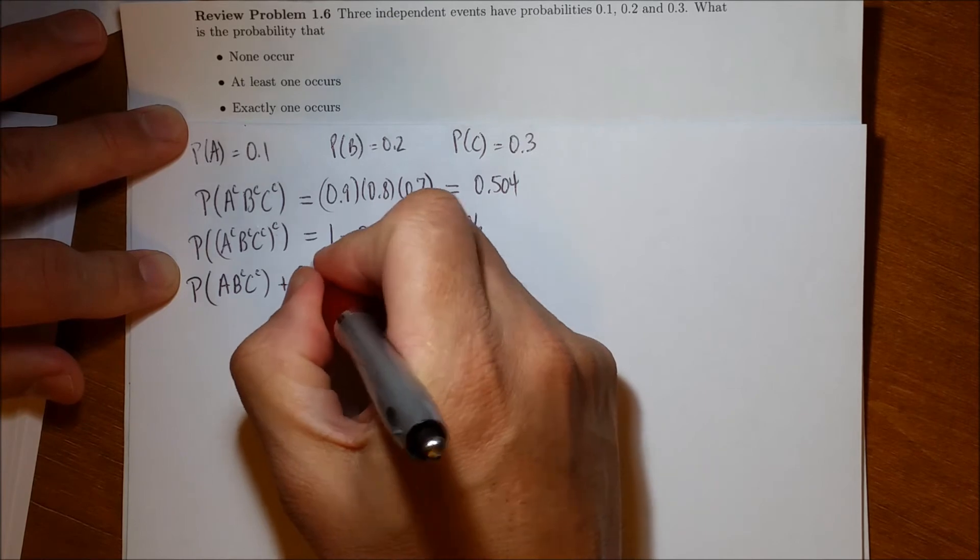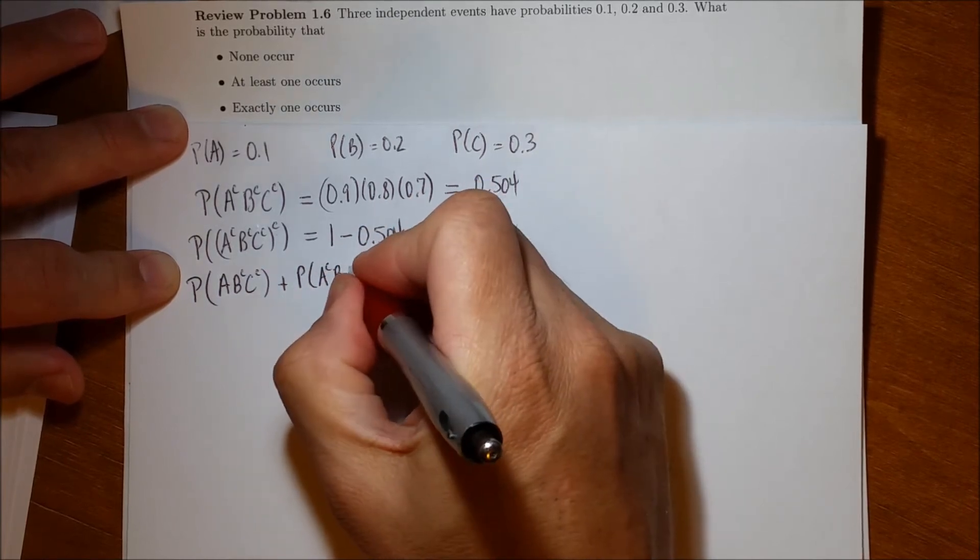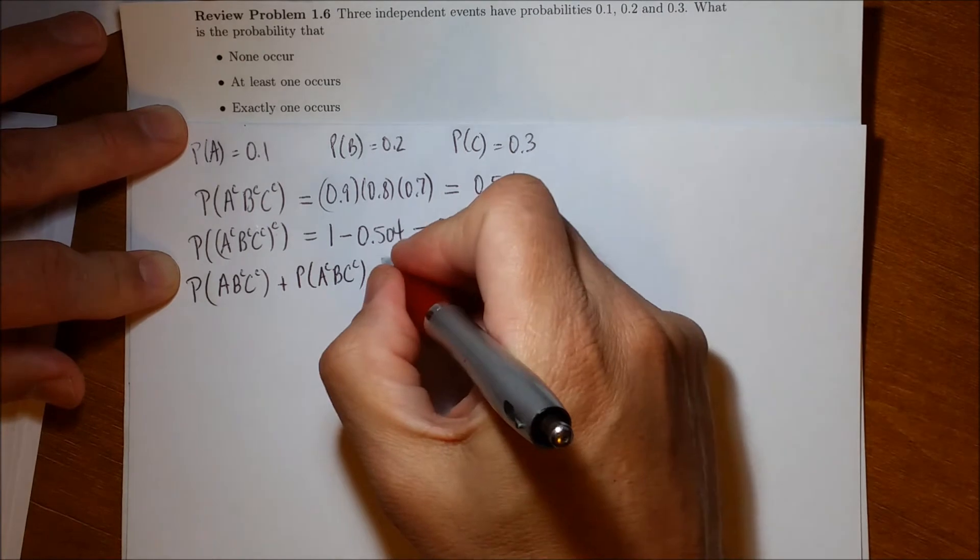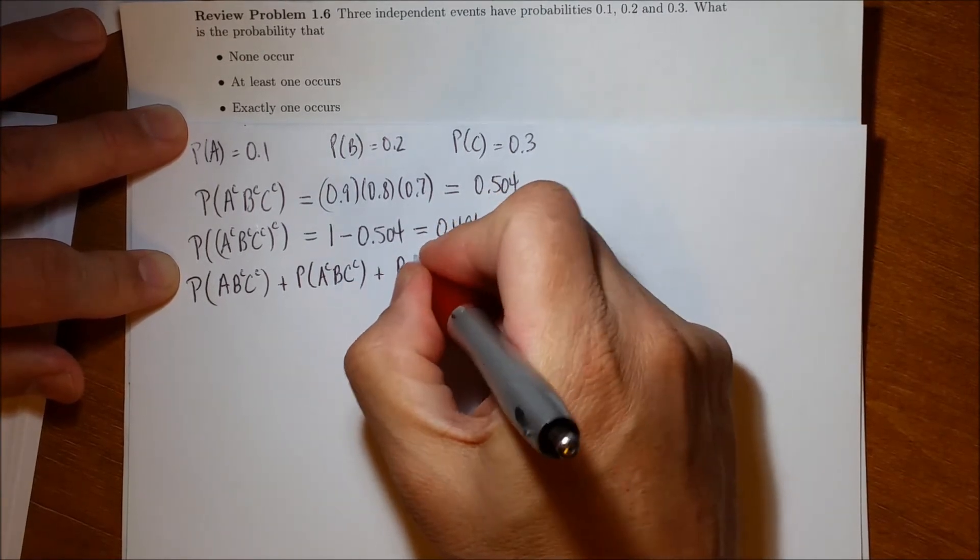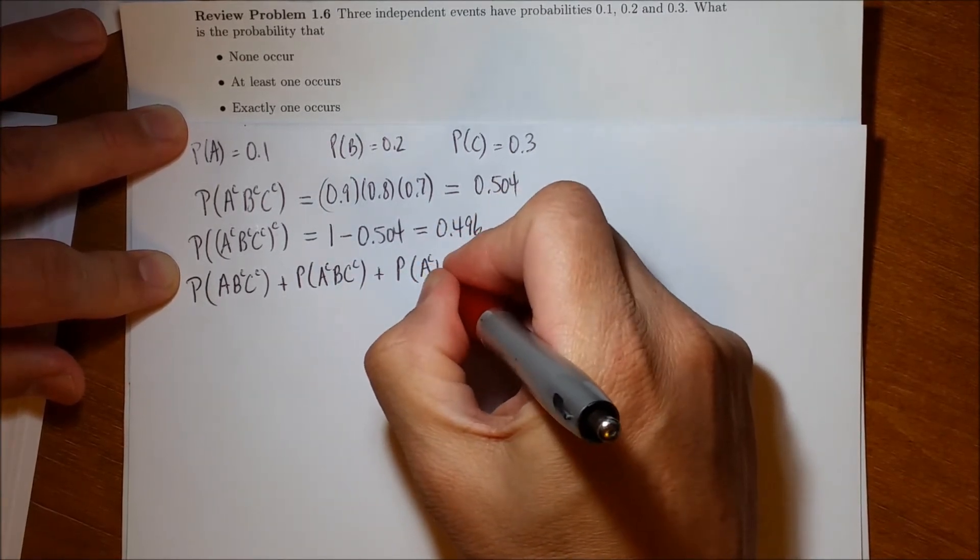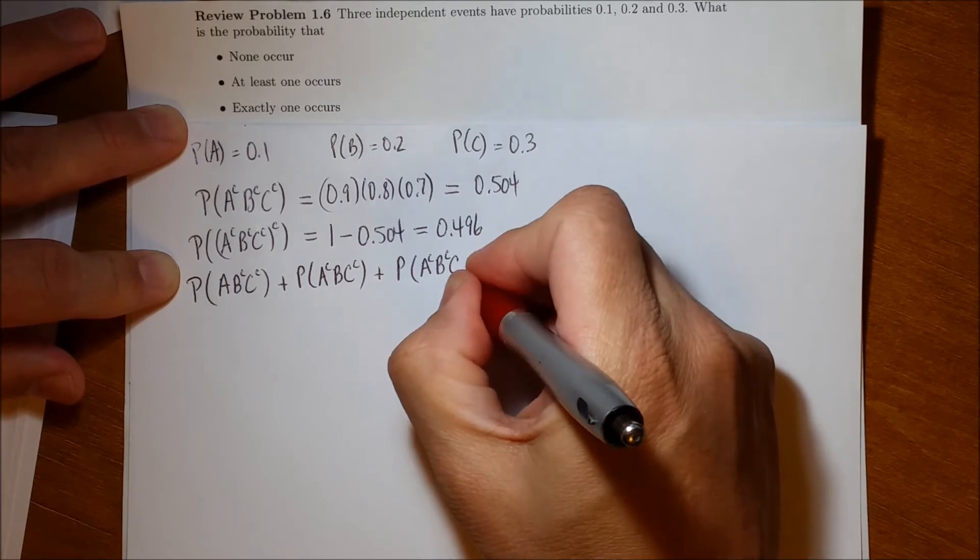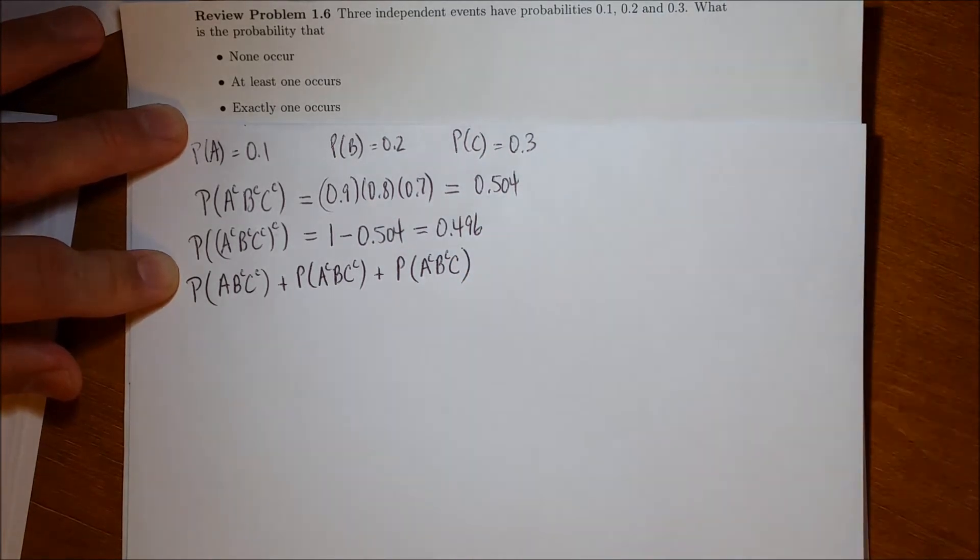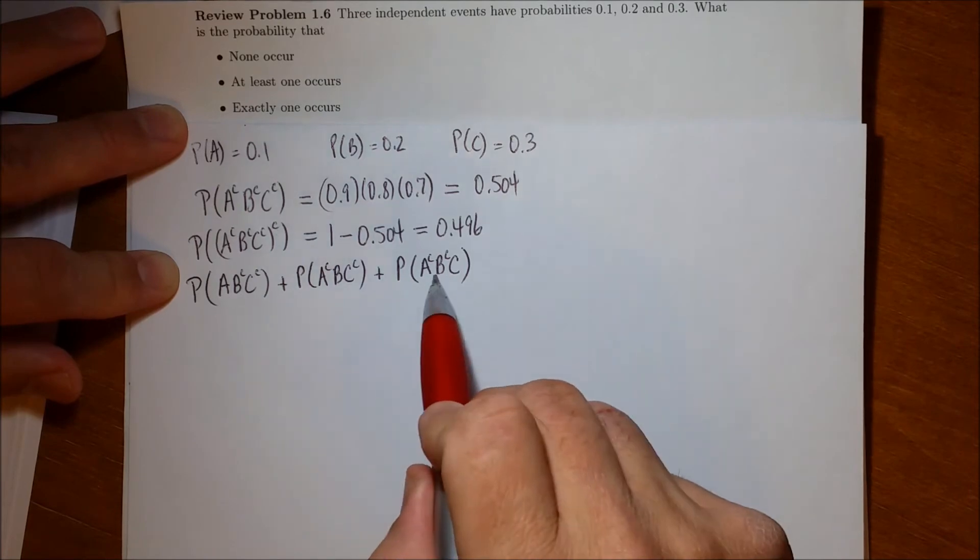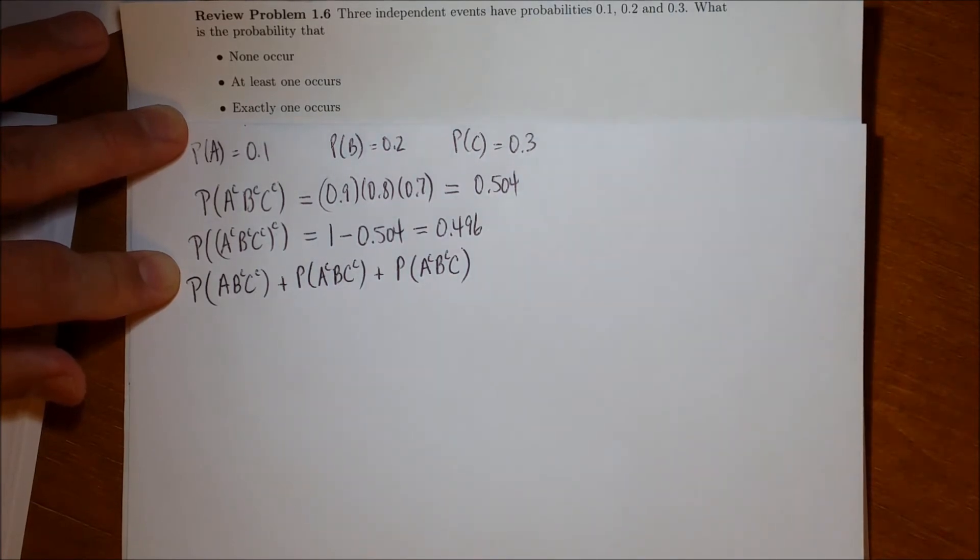Or, the first one does not happen, the second one happens, and the third one does not happen. And the last possibility is that the first does not happen, the second does not happen, but the third one does happen. And this is an or question. It's the union of these three disjoint events, so I can just simply add them up.